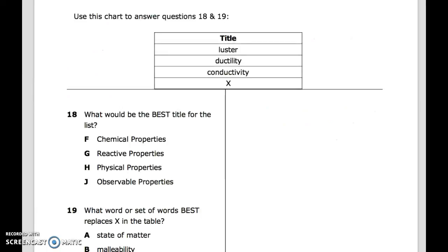Use this chart to answer questions 18 and 19. Title, Luster, Ductility, Conductivity. 18: What would be the best title for the list? F. Chemical Properties. G. Reactive Properties. H. Physical Properties. J. Observable Properties.